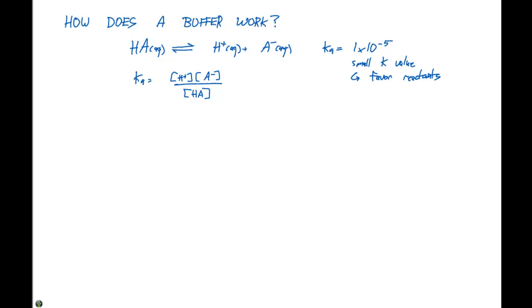Remember, we want buffers to keep a constant pH, which depends on the H⁺ concentration. So let's rearrange this here as the H⁺ equal to the Ka times the concentration of HA divided by the concentration of A⁻.